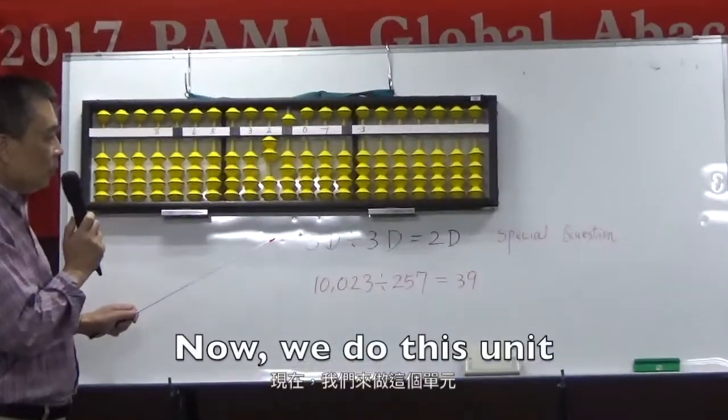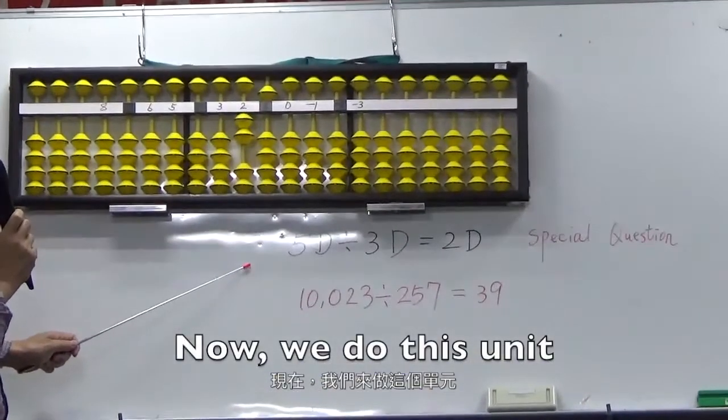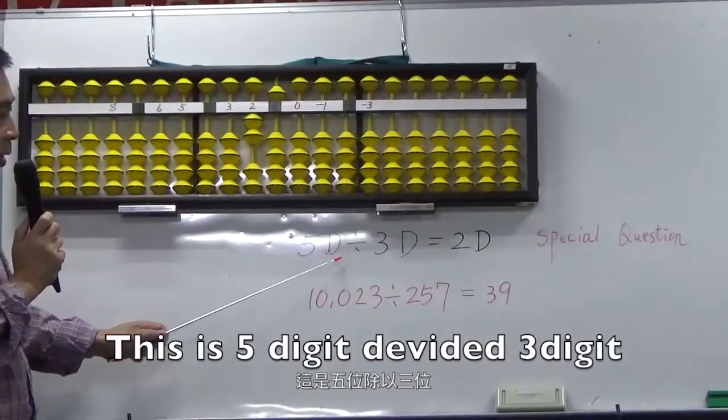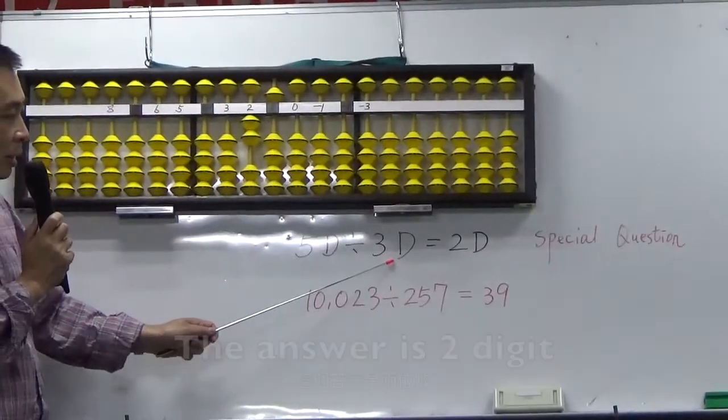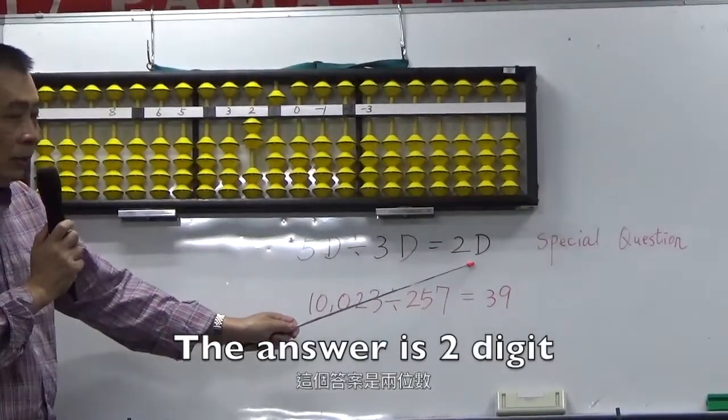Now, we do this unit is 5-digit divided by 3-digit. The answer is 2-digit.